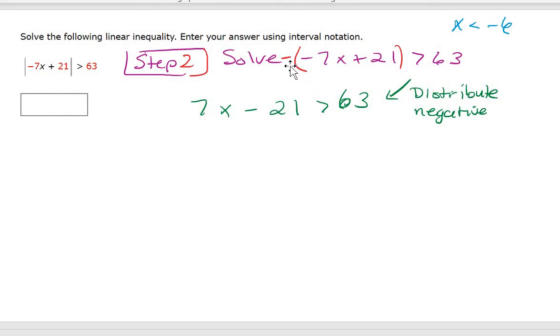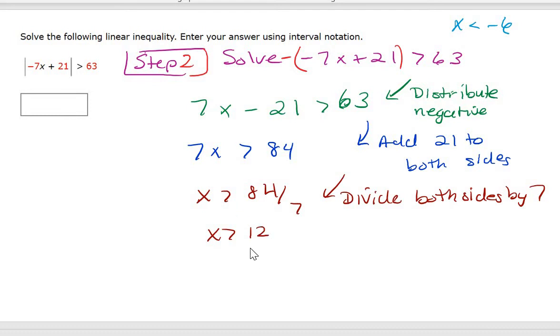If I distribute the negative: negative times a negative is a positive, negative times the positive 21 is a negative. So I'm really careful when it comes to minus signs. I still make mistakes - it's just hard to track them, but be very careful. Then do the same thing: add the 21 to both sides to get rid of the 21. That becomes 84, and then divide both sides by seven. So I get x is bigger than 12 from doing the negative version of the absolute value.